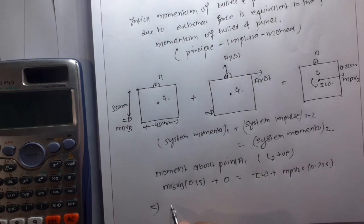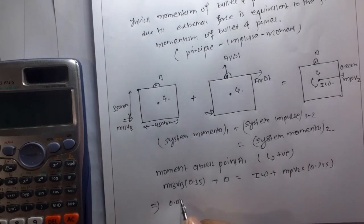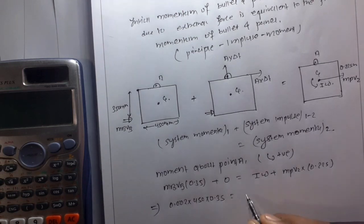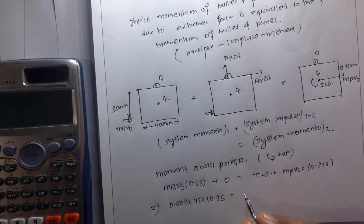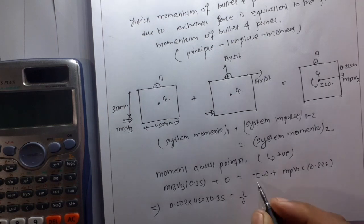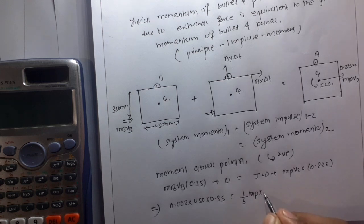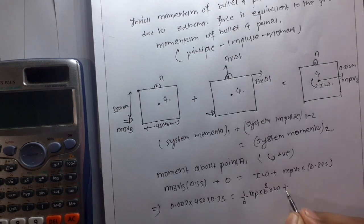This implies mb, which is 0.02, into vb, which is 450, into 0.35, which is equal to I times omega. For the square panel, I is one-sixth mp times b squared.